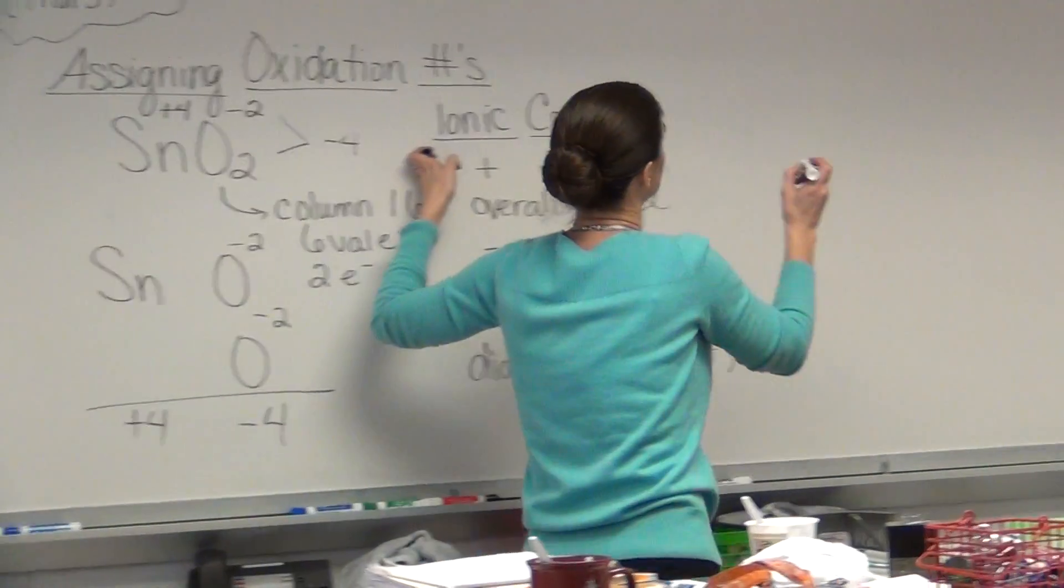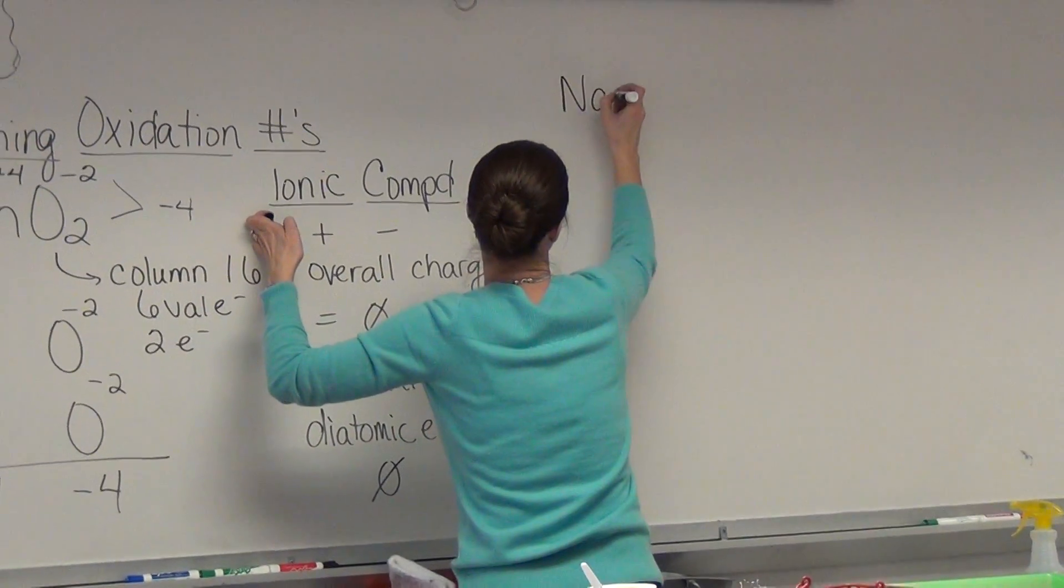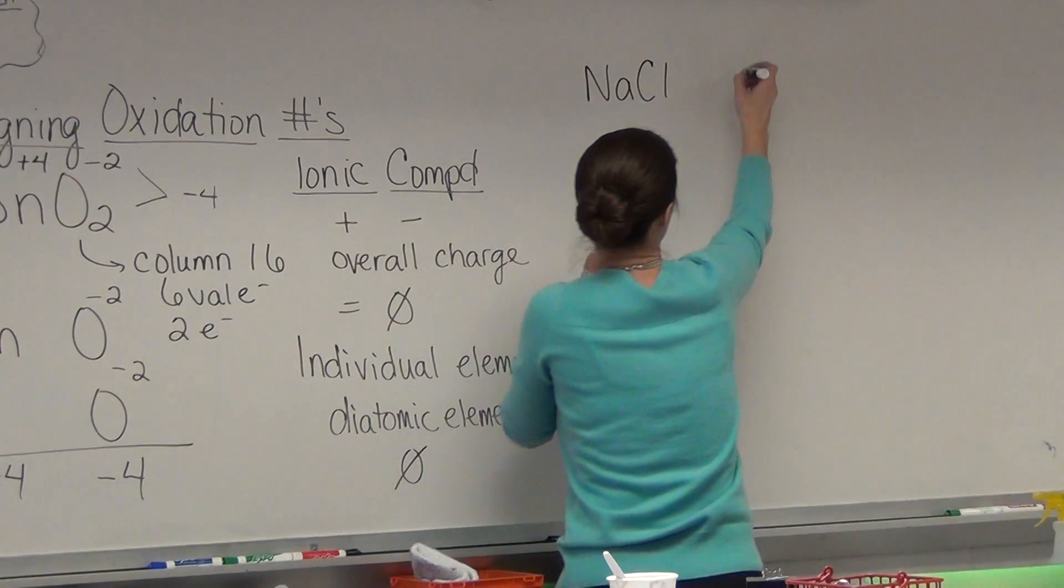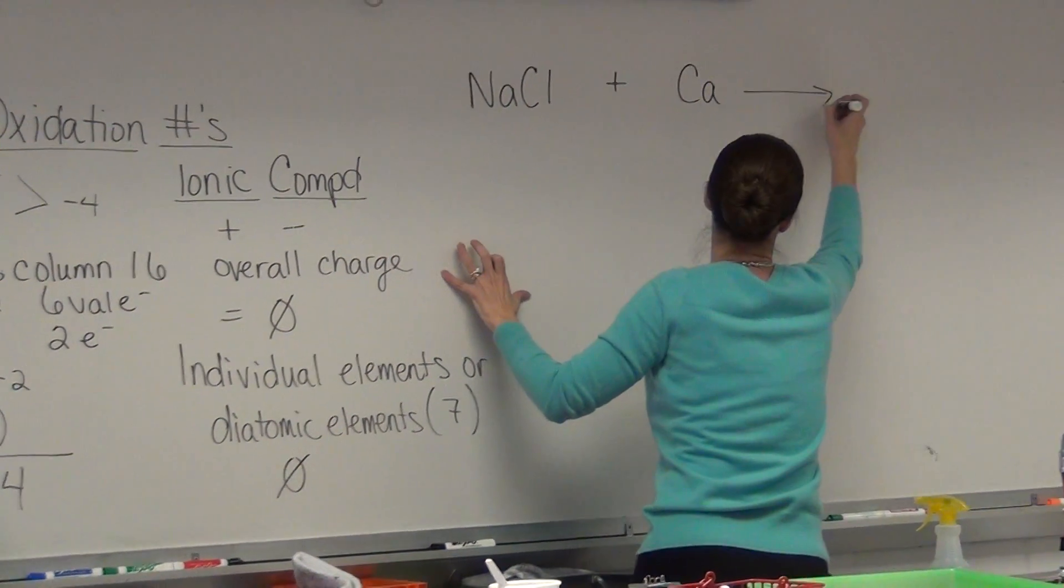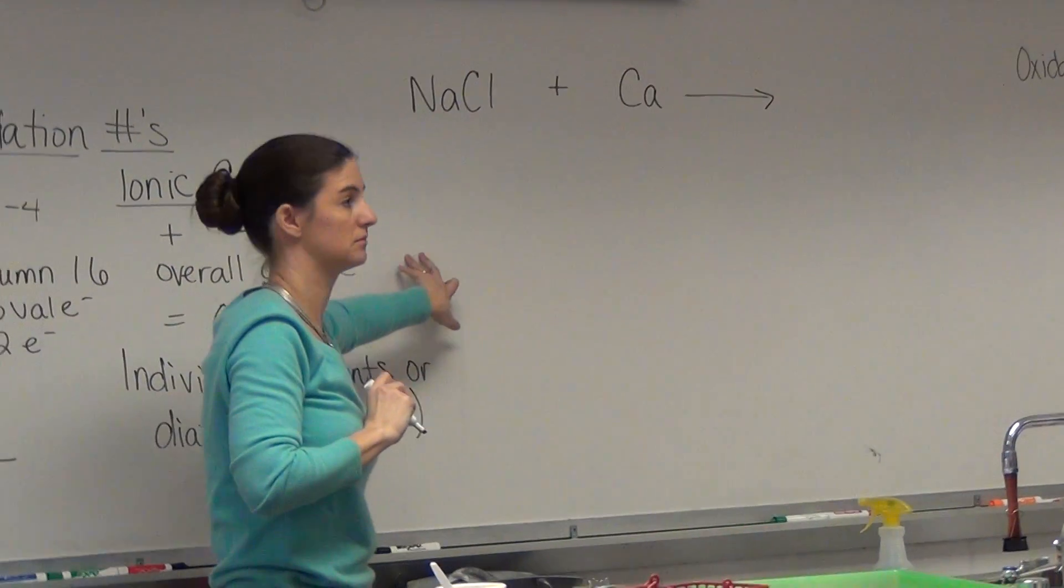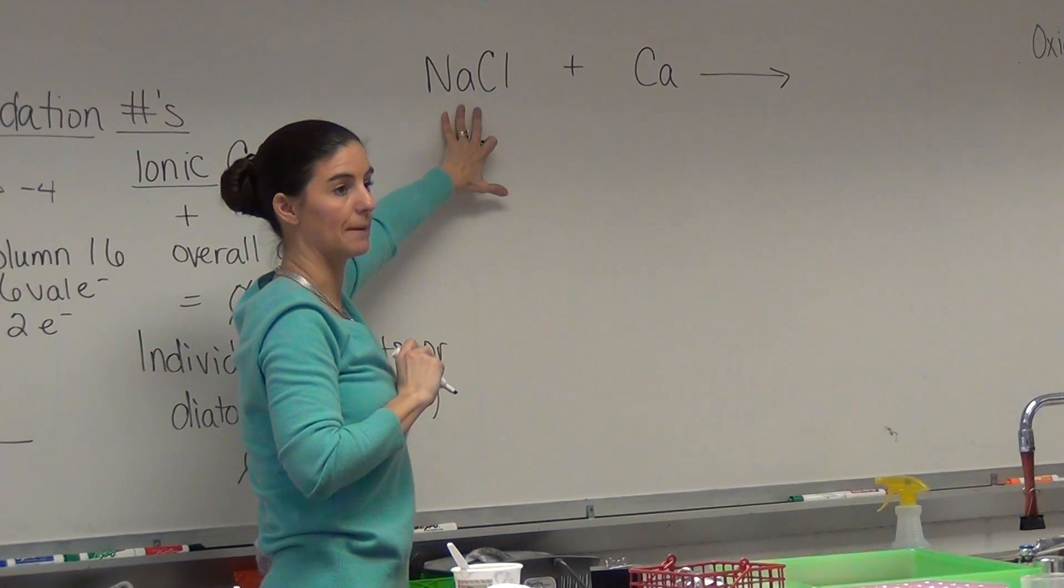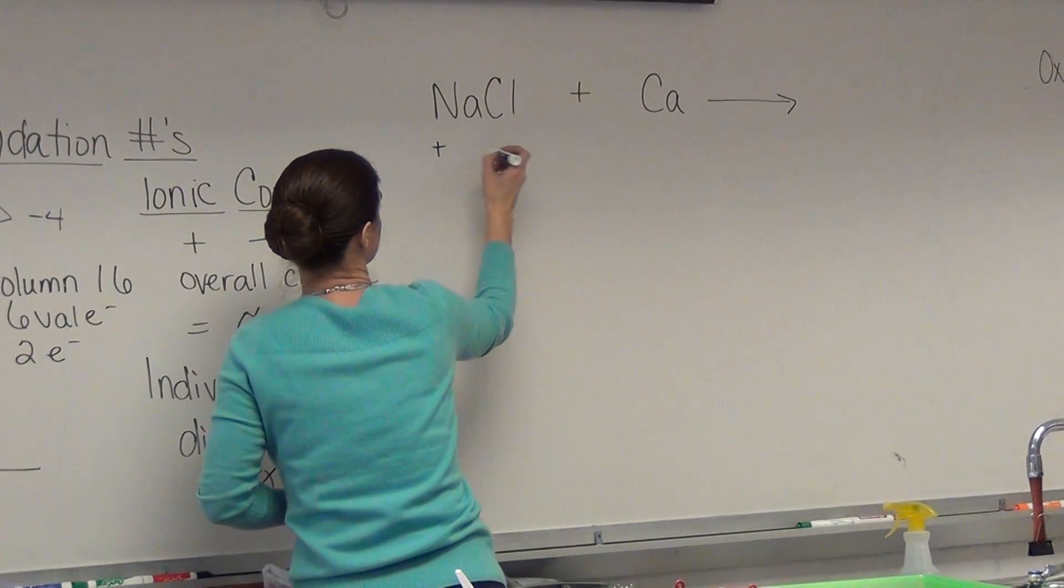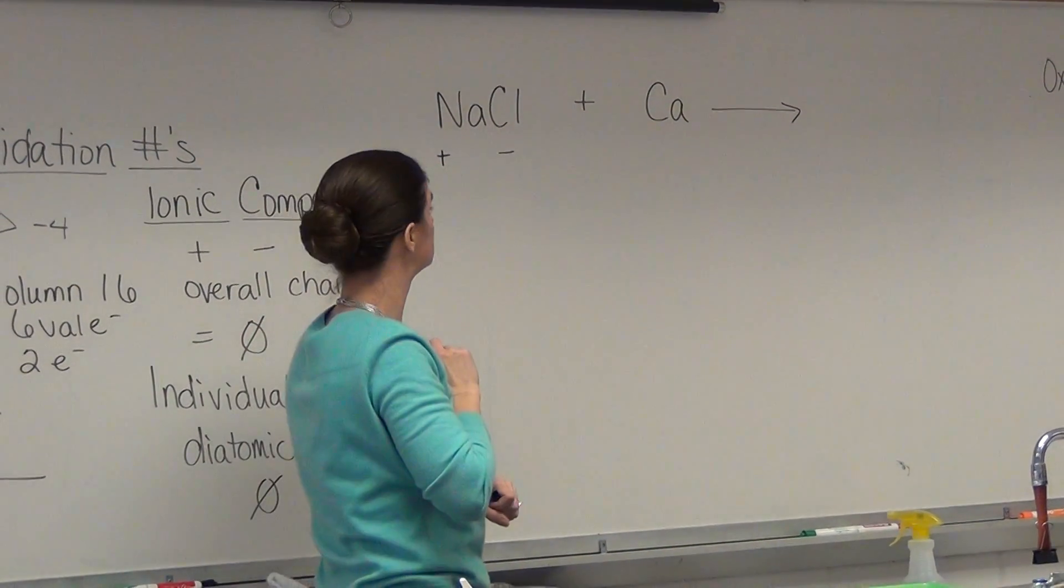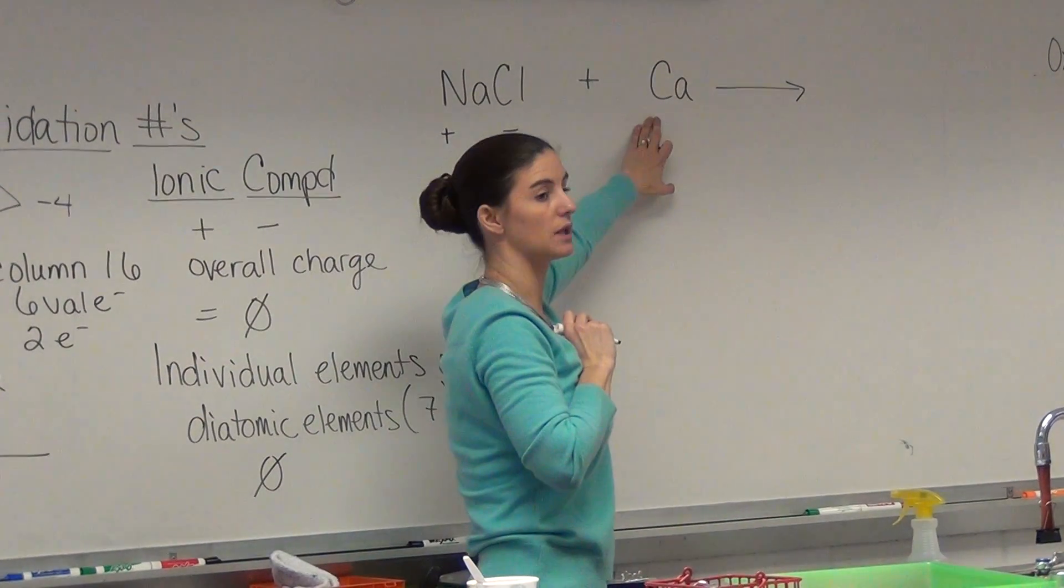So what does that mean? If we have this: NaCl plus Ca, and we have an arrow. Ionic compound. What made up the ionic compound? Positive and negative. Individual element.